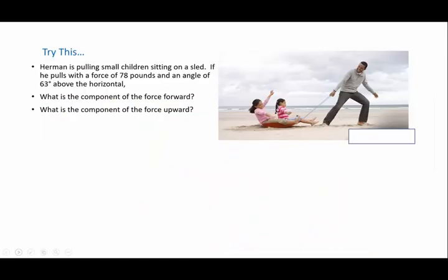You think you got it? Okay, let's try another one. If you got it, try this. If not, follow along with me. Herman is pulling his small children on a sled. If he pulls with a force of 78 pounds at an angle of 63 degrees above the horizontal, what's the component forward, and what is the component upward?